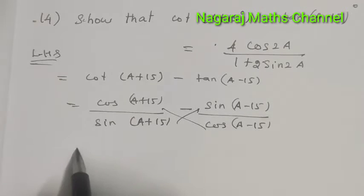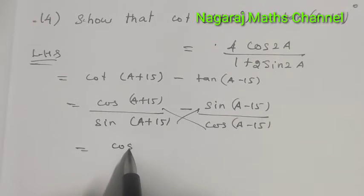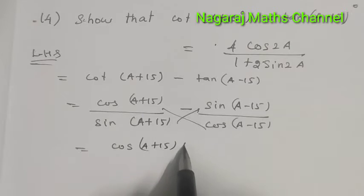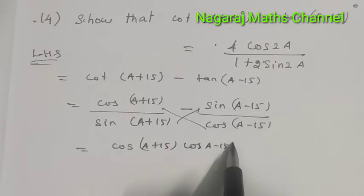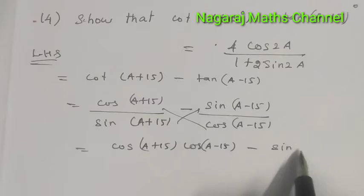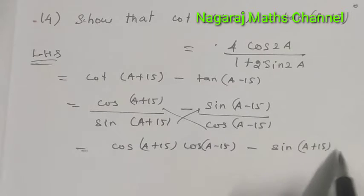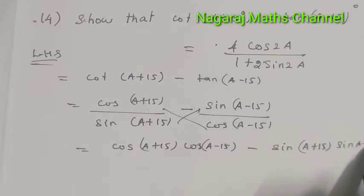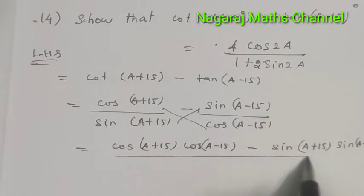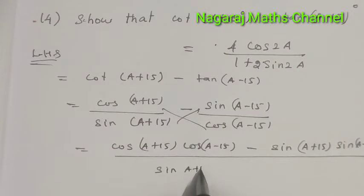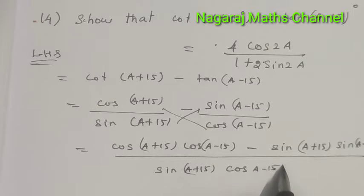Let's do the cross product. This gives us [cos(A+15°)cos(A-15°) - sin(A+15°)sin(A-15°)] divided by [sin(A+15°)cos(A-15°)].